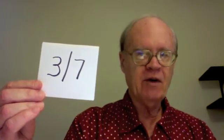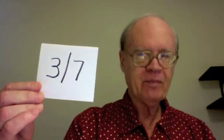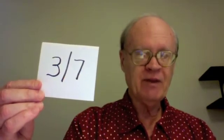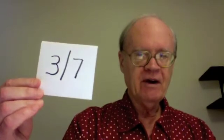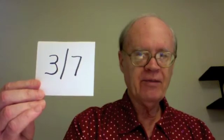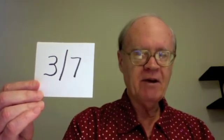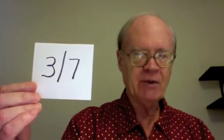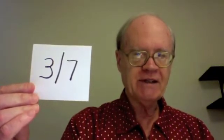Well, it depends on what system you're using. Under one system, this represents March 7th. Under the other system, it represents July 3rd. And so, this date name is ambiguous since there are two possible dates that it can actually represent. So this is an example of an ambiguous date name.